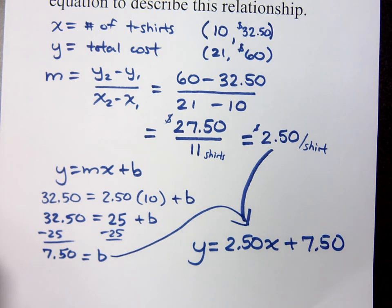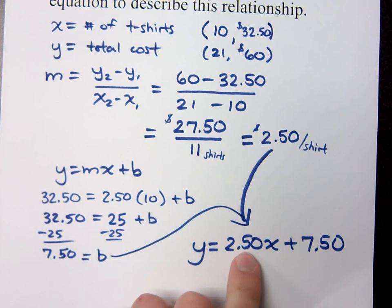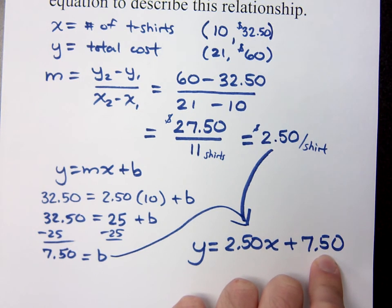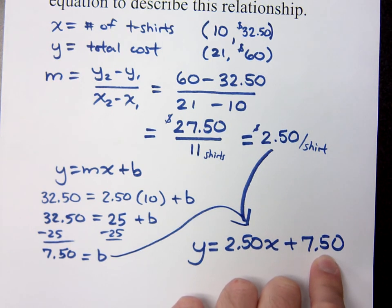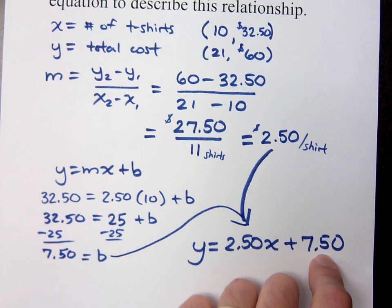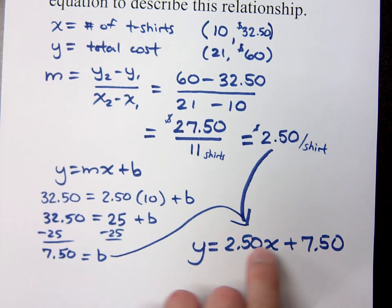What does y = 2.50x + 7.50 mean? Y represents the total cost; the $2.50 is the unit price — the cost per shirt. The $7.50 is a flat cost. A lot of times when you order from online retailers, there's a flat cost for shipping or processing and handling. This retailer charges $7.50 regardless of whether you order one shirt or a thousand shirts.